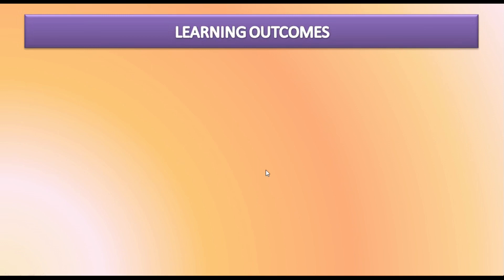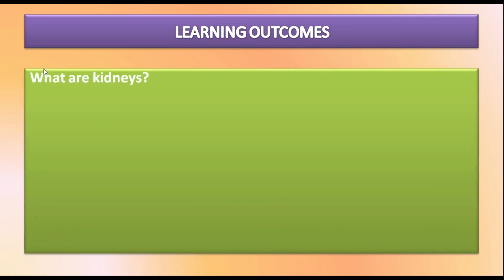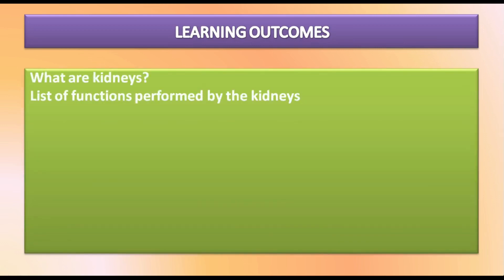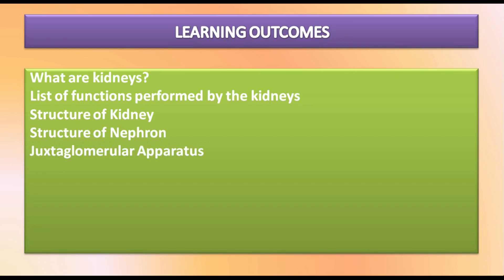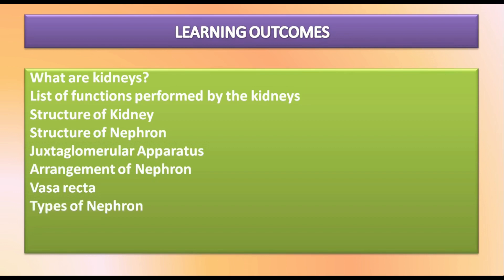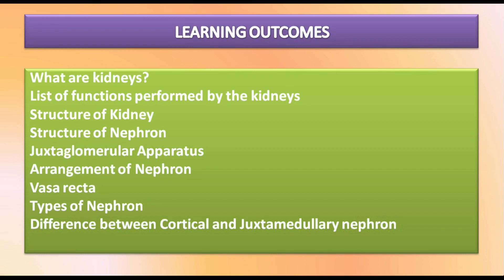The objectives of this presentation address the following learning outcomes: what are kidneys; list of functions performed by the kidneys; structure of the kidney; structure of the nephron; the juxtaglomerular apparatus; the arrangement of nephrons in the kidney; the vasa recta of the kidney; types of nephrons; and finally the difference between cortical and juxtamedullary nephrons.